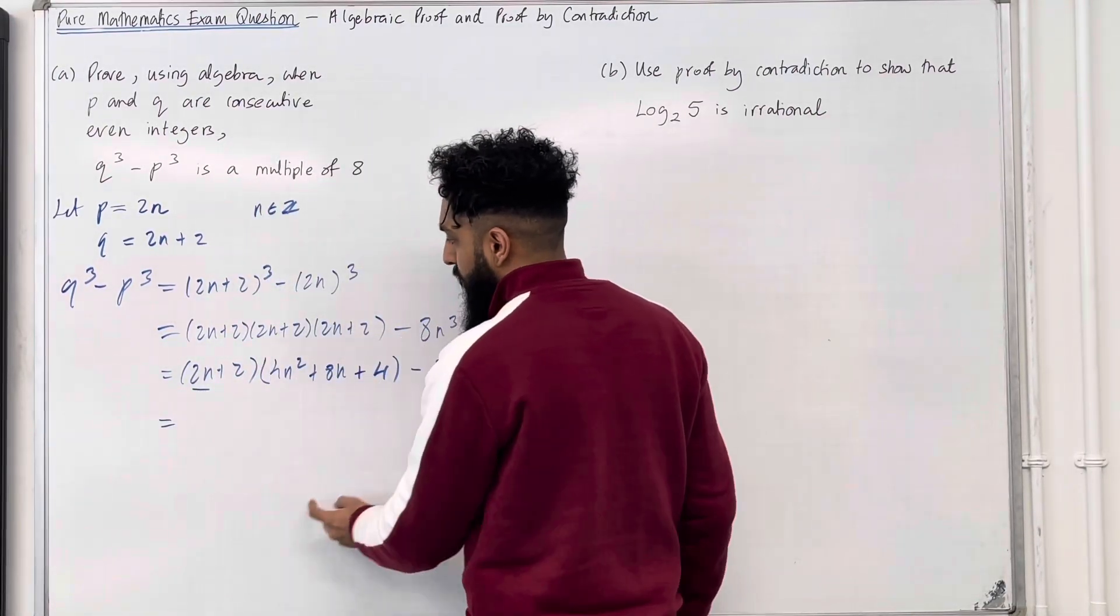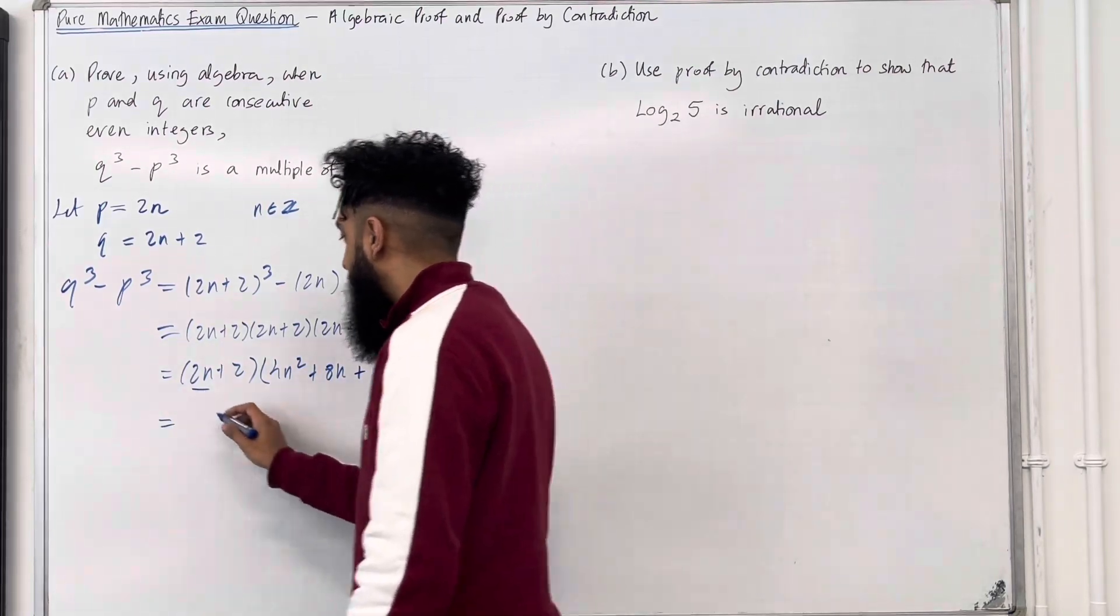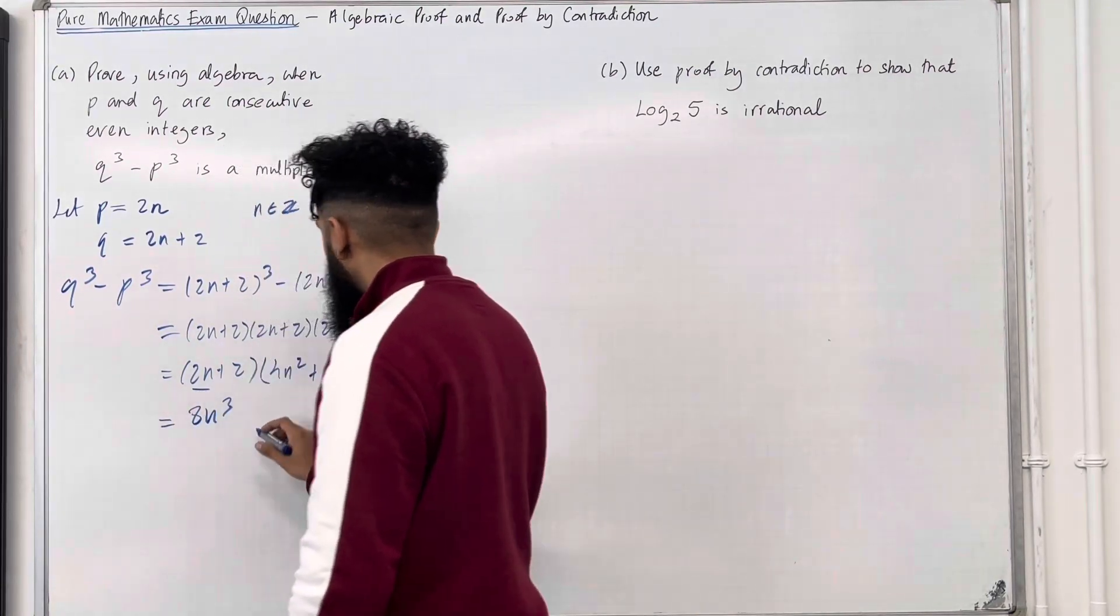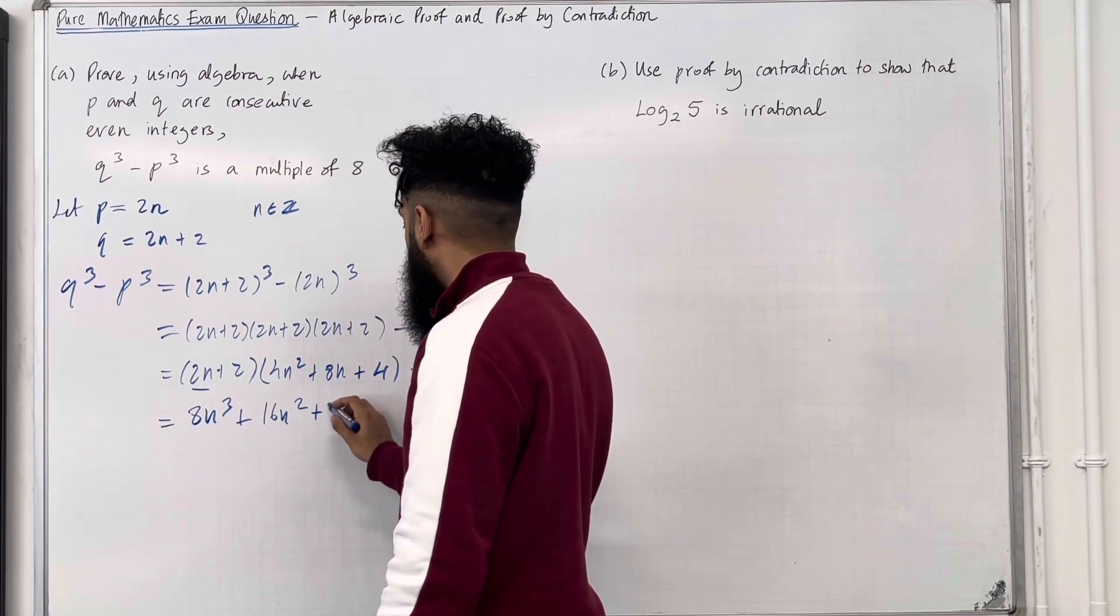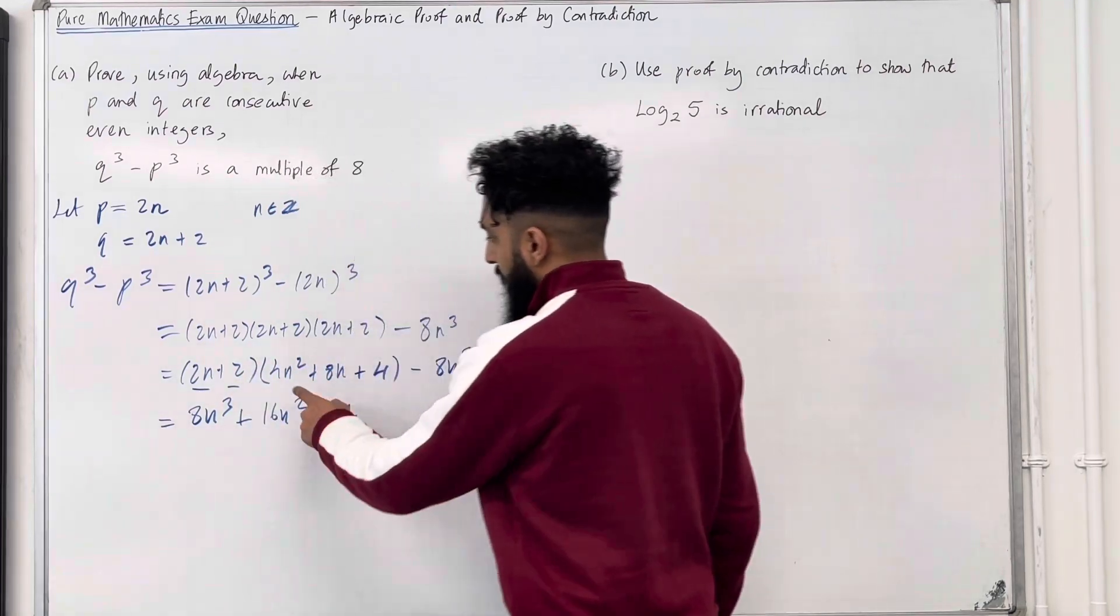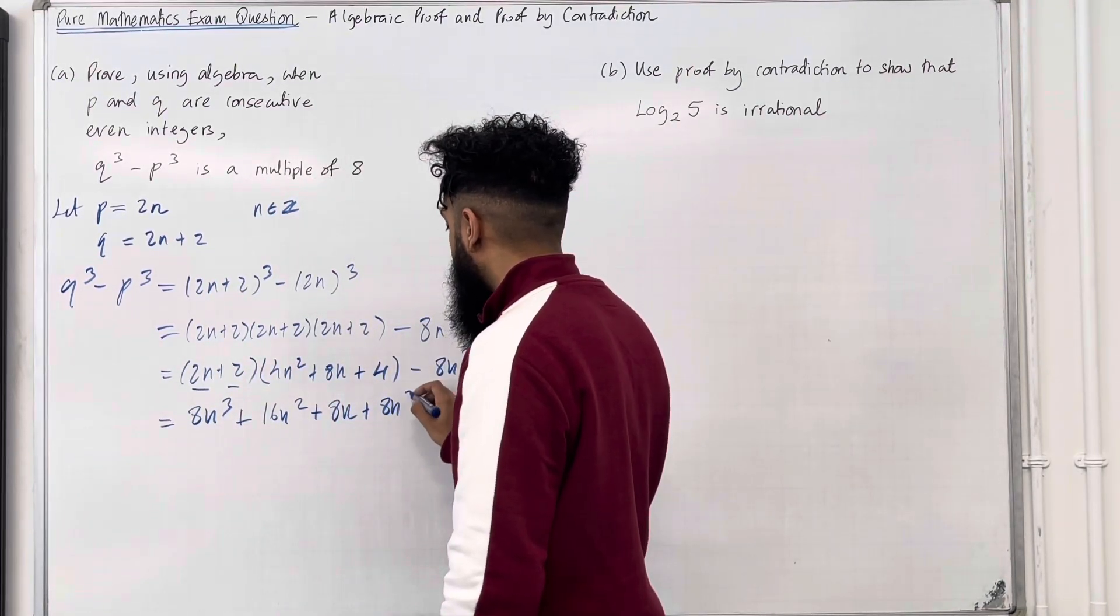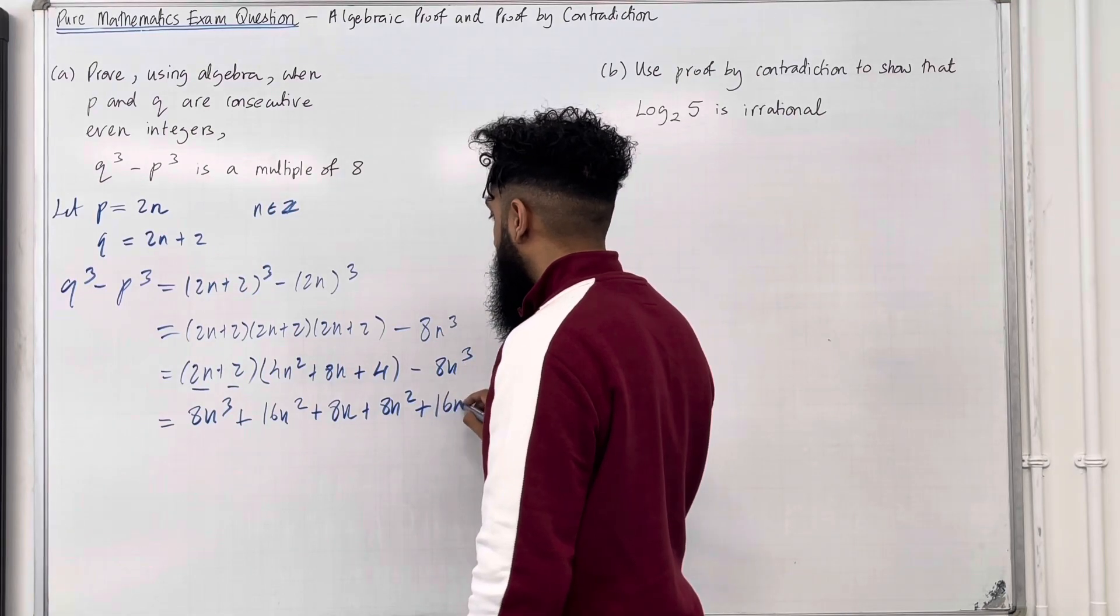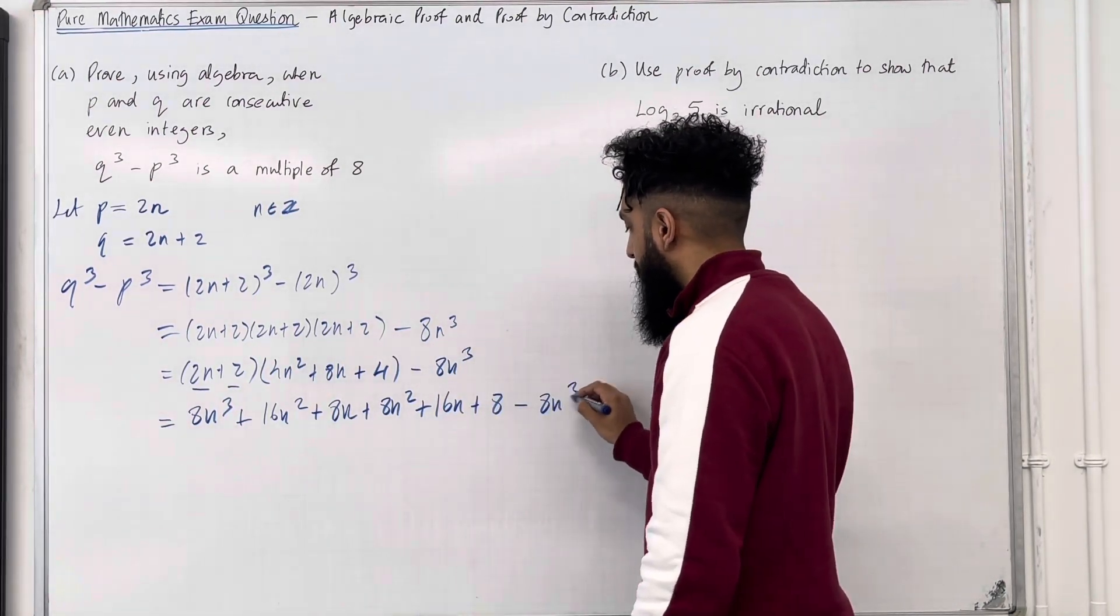So we'll start off with the 2N expanded with 1, 2, 3 terms. We've got 8N cubed plus 16N squared plus 8N. Now we're going to expand the positive 2 with 1, 2, 3 terms. So we've got 8N squared plus 16N plus 8, take away the 8N cubed.